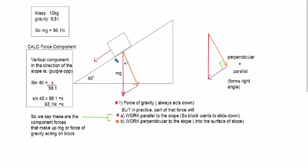But with an inclined slope what happens in practice is that part of that force will work parallel to the slope so the block wants to slide down like this, and part of it will work perpendicular to the slope pushing the object into the surface of the slope. So the presence of an inclined slope breaks the force vector weight up into two component parts. These are component forces that make up mg or the force of gravity acting on the block.